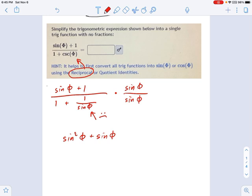And next, I'm going to have multiplication on the bottom. That's going to be this term right here and this term right here. It's going to be sine phi plus, well, sine times 1 over sine is just 1. So that's great.